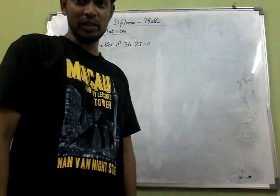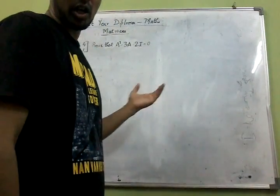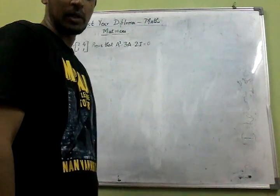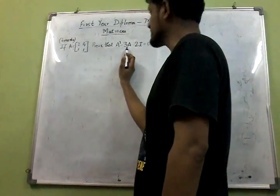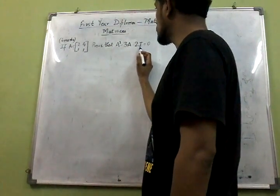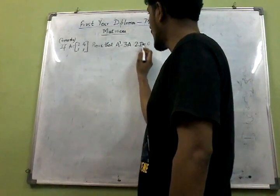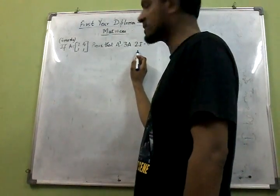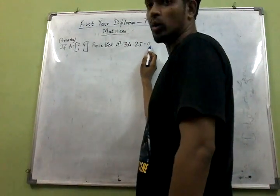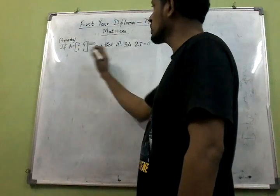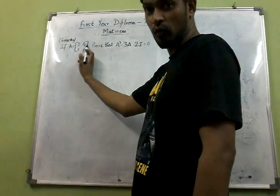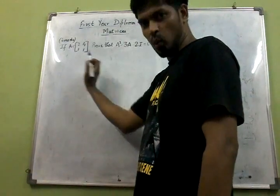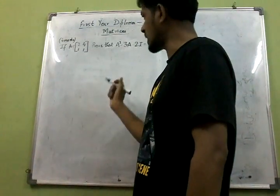Hi friends, today's topic of discussion is a numerical problem from the chapter matrices. We need to prove that A squared minus 3A minus 2I, where I is the unit matrix, is equal to the zero matrix. Here A is given with elements 2, 4, 1, and 1.